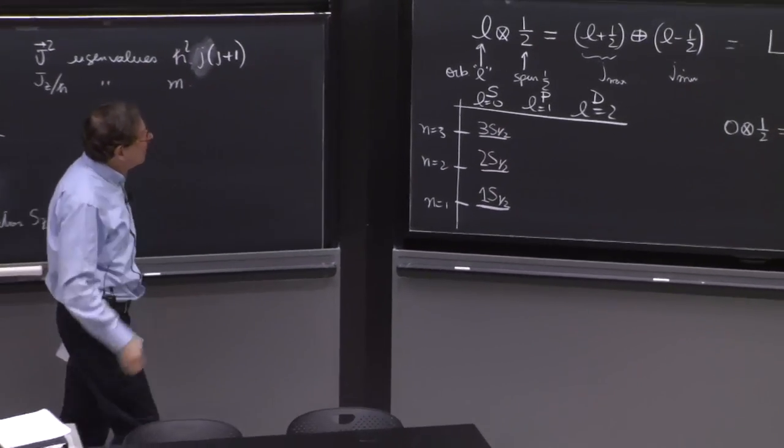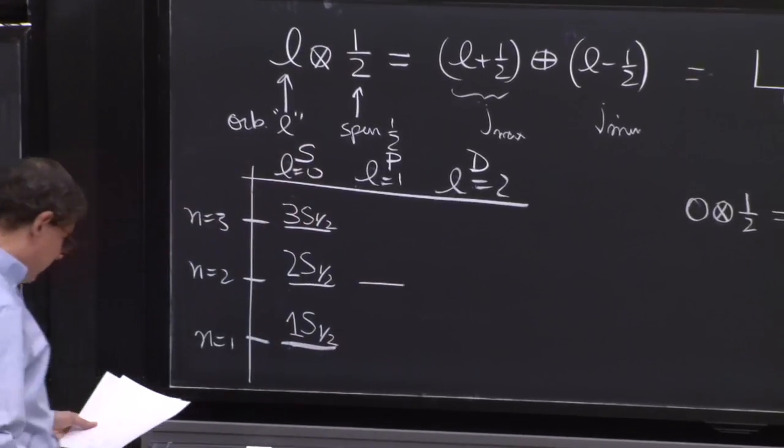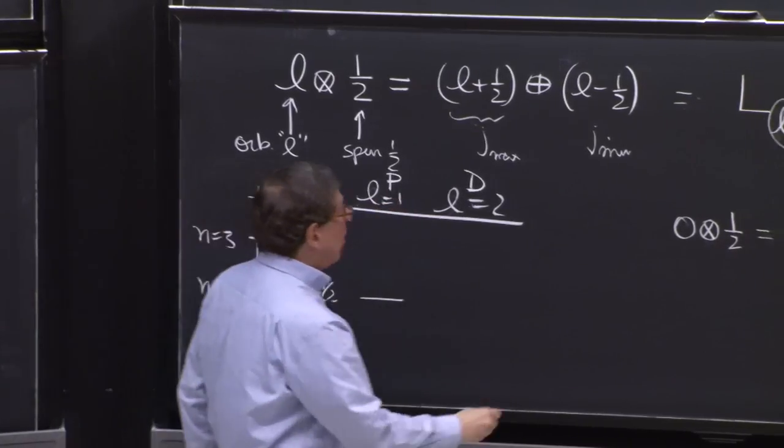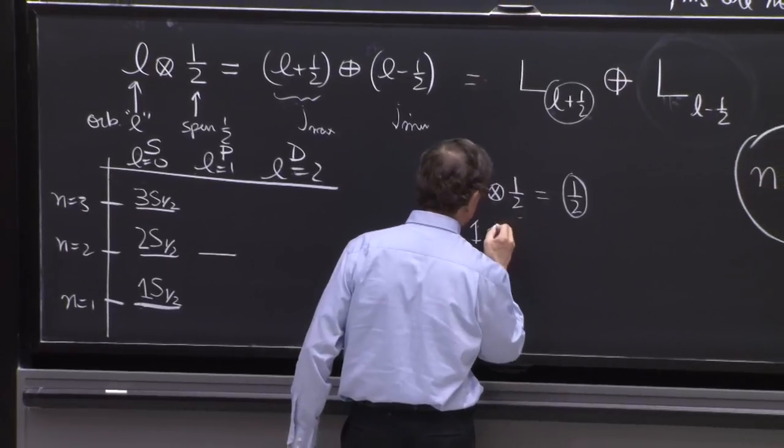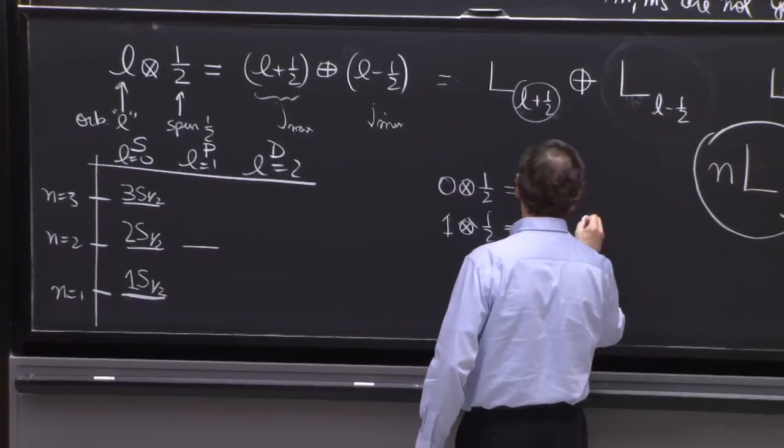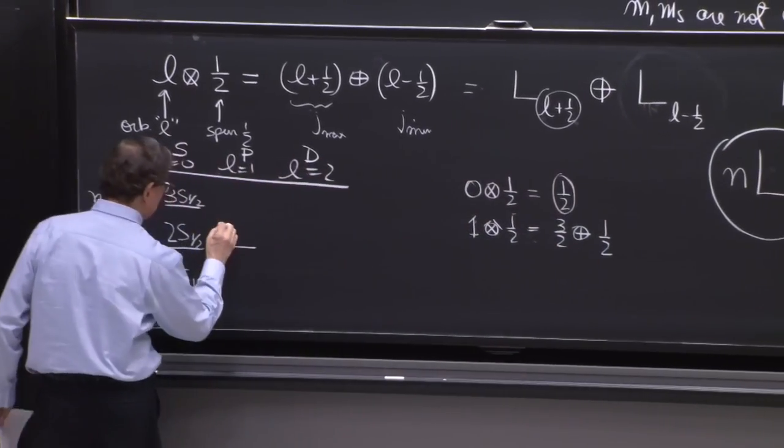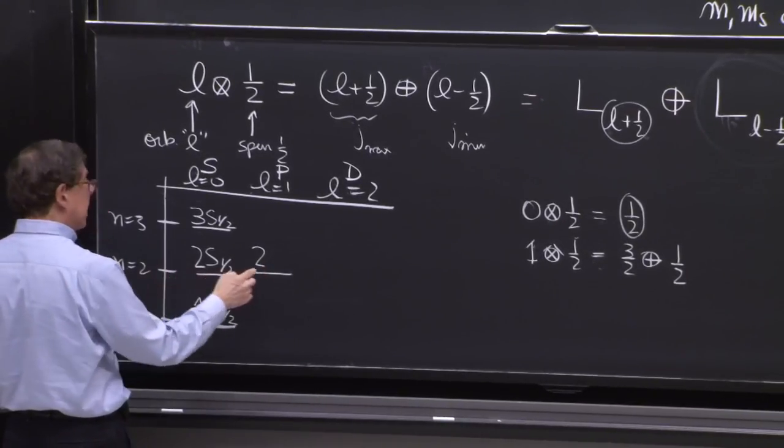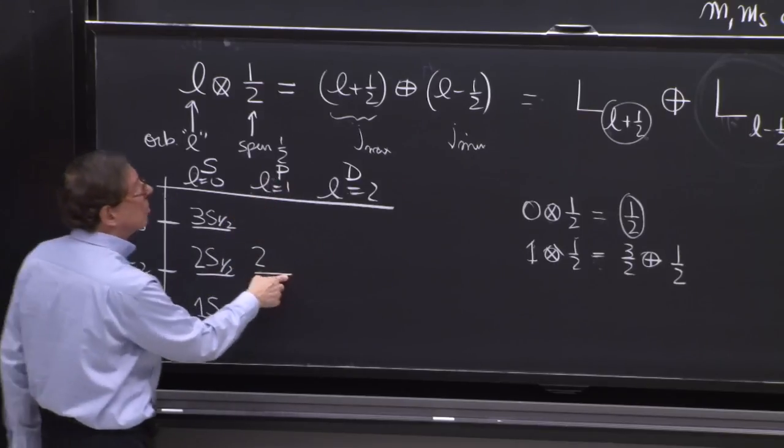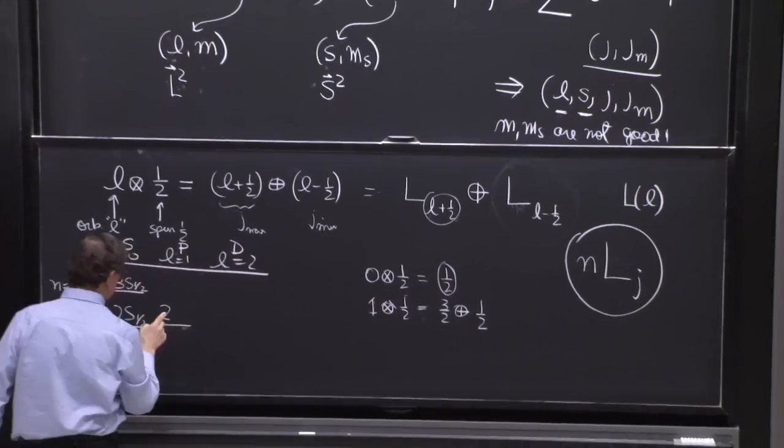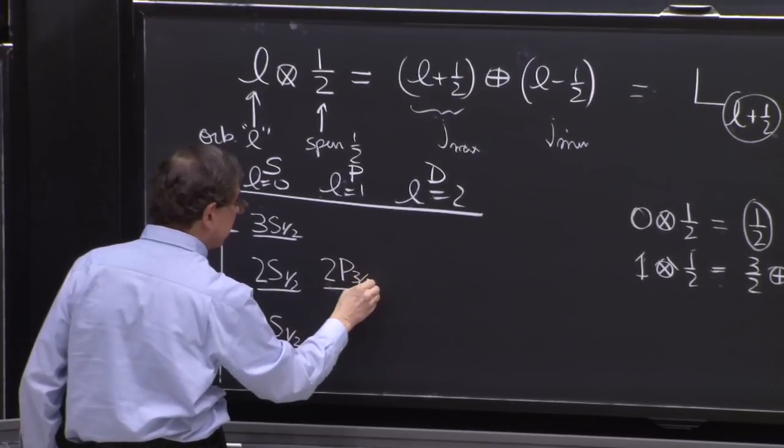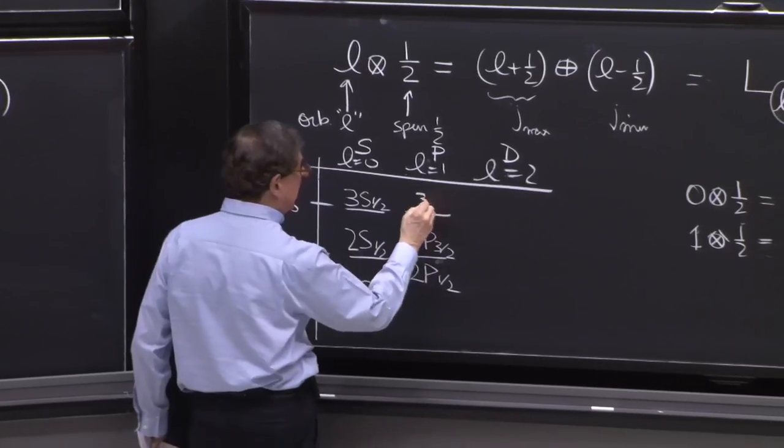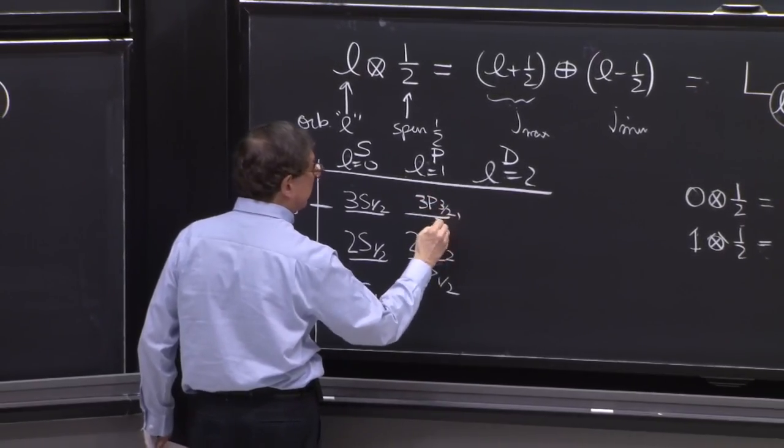What do we have here? We have l equals 1. So with l equals 1, we have 1, tensor 1 half. So we will get j equal 3 halves and 1 half. So we must have 2. 2, what is the value of l? Remember, the value of l is preserved. So if this was l equals 1, after you do the tensor product, l is still a good quantum number. So you have 2 p, 3 halves, and 2 p, 1 half. Here, you would have 2 states, 3 p, 3 halves, and 3 p, 1 half.